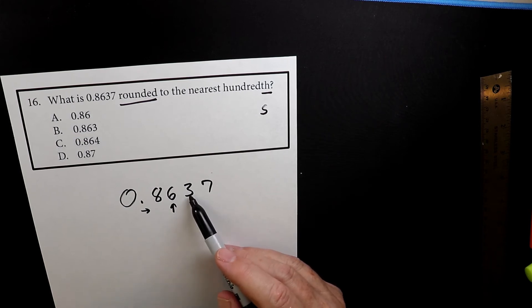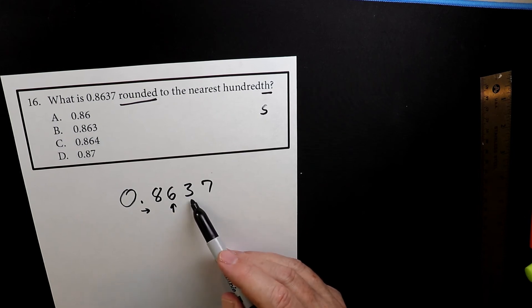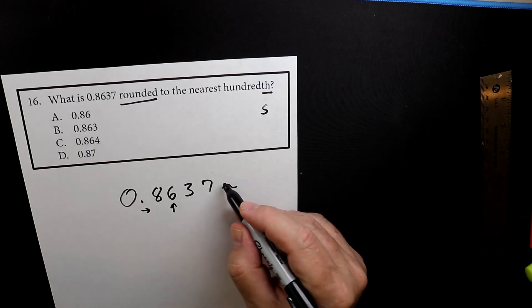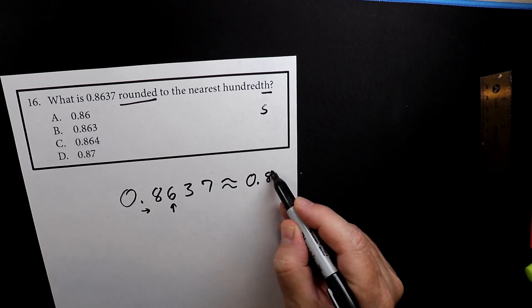If it's 5 or bigger, then it goes up. So since this is a 3, the 6 stays the same. So this is approximately equal to 0.86.